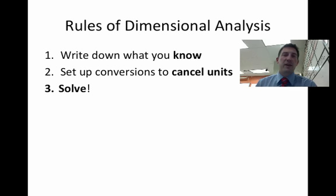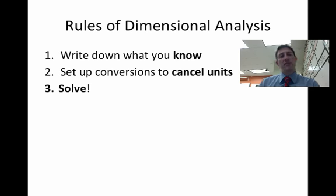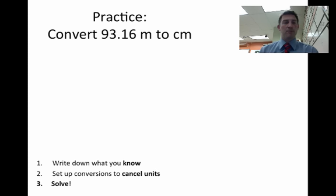There are three oversimplified rules of dimensional analysis. Number one is that you write down what you know. Every equation that you run into for dimensional analysis has to give you something to start with — sometimes people will call this the given. Then, number two, we're going to set up conversion factors to cancel out the units. In science, and oftentimes in real life, we're never dealing with just numbers — we're always dealing with numbers that mean something. We'd never write down just 10, because we don't know if that means $10, 10 meters, or 10 gallons. You have to explain what the units are. And then the last step, number three, we're going to solve the problem.